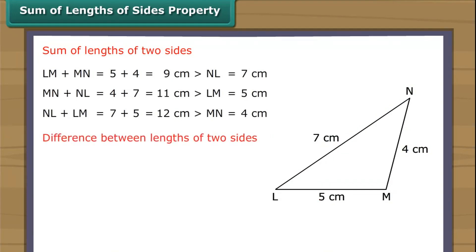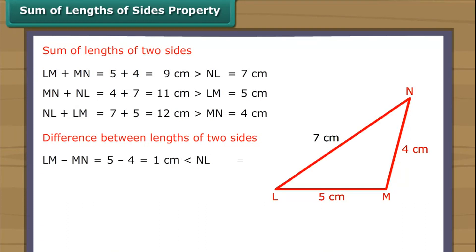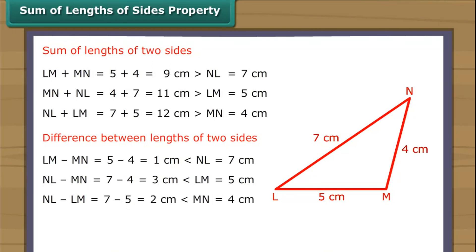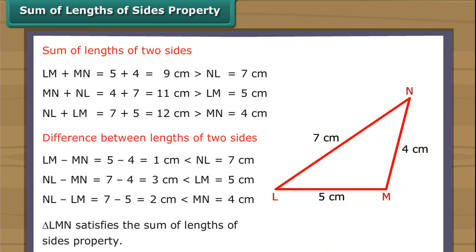Now for the differences: LM minus MN equals 5 minus 4, which is 1 cm — smaller than NL (7 cm). NL minus MN equals 7 minus 4, which is 3 cm — smaller than LM (5 cm). NL minus LM equals 7 minus 5, which is 2 cm — smaller than MN (4 cm). Triangle LMN satisfies the sum of lengths of sides property.